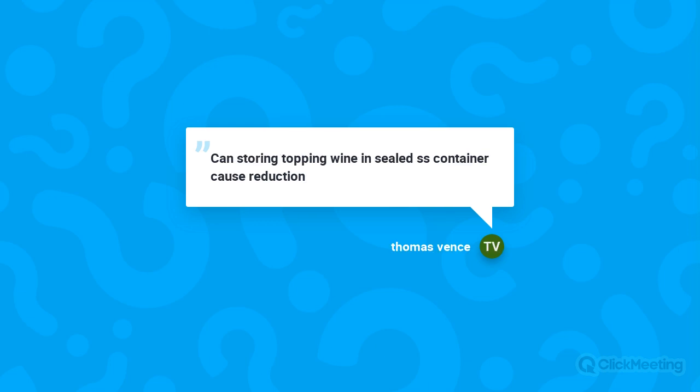Thomas asks whether storing topping wine in a stainless steel container can cause reduction. Yes — if reduction is present as disulfides or copper-bound sulfides, a sealed stainless steel container becomes reductive, which can break disulfides into mercaptans or release copper-bound sulfides, causing reduction to reappear.